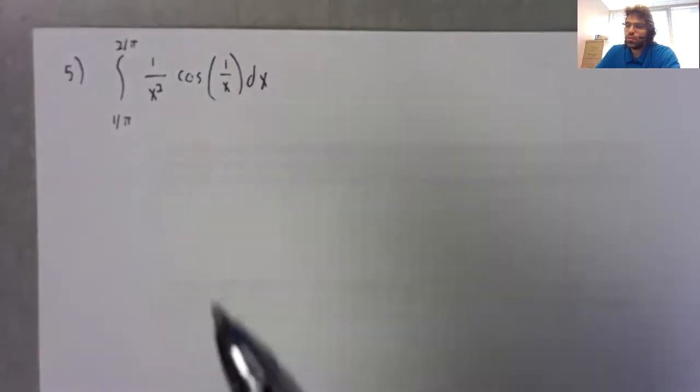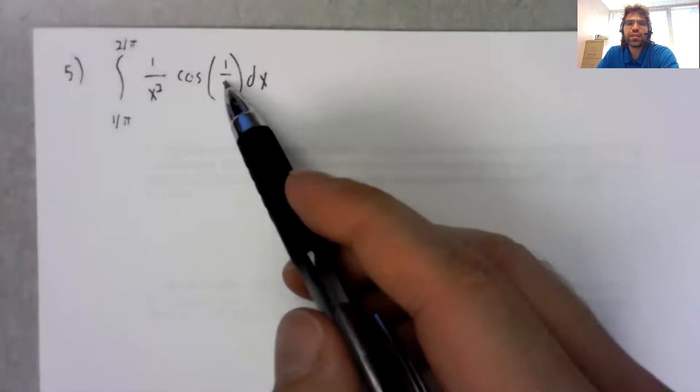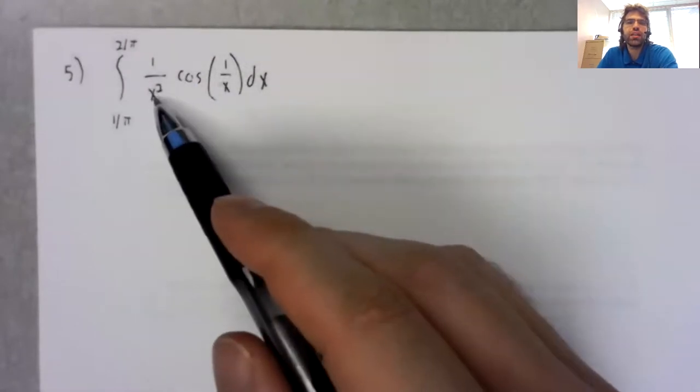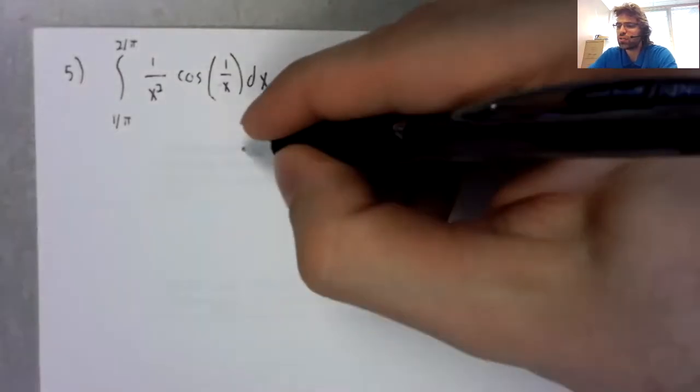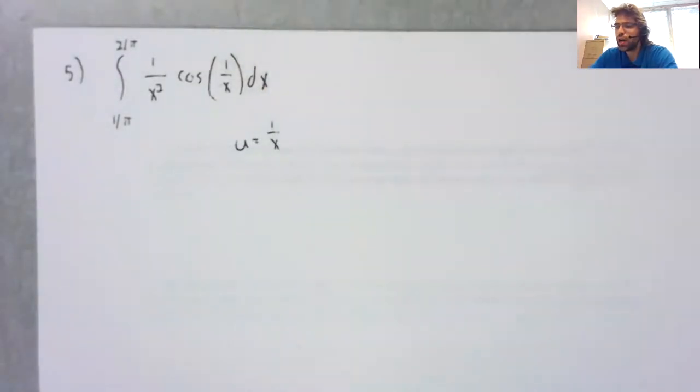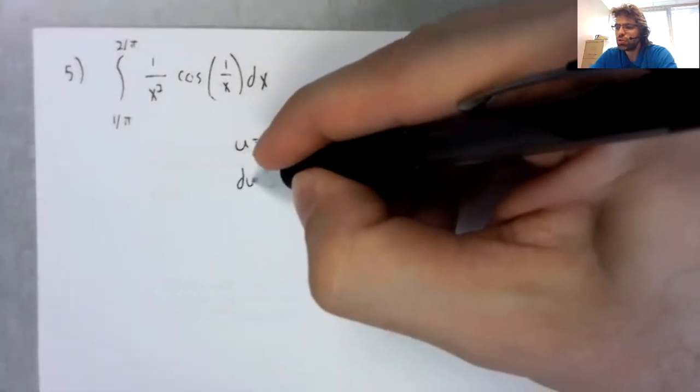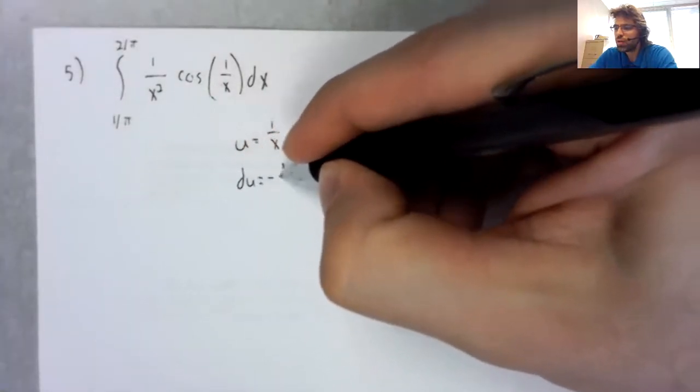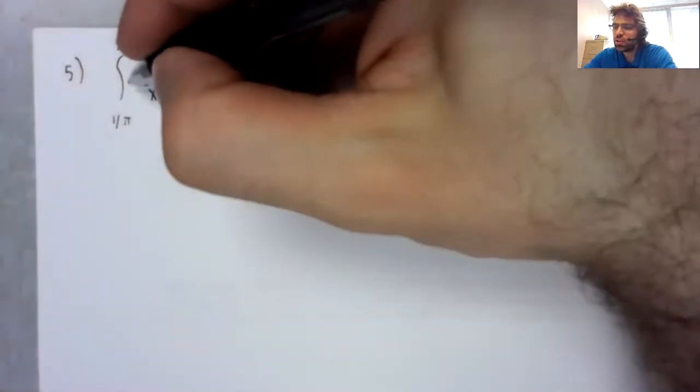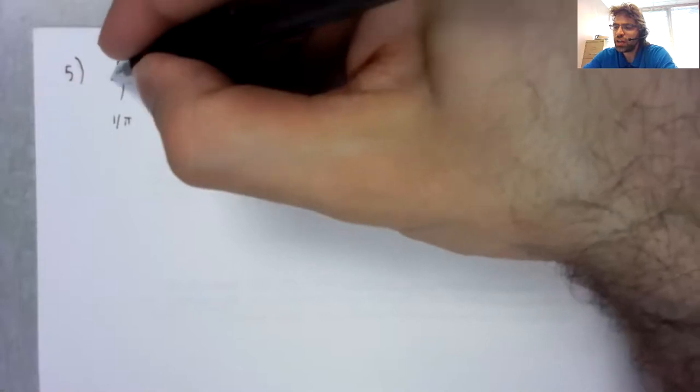So 1 over x has as its derivative negative 1 over x squared. So this is crying out for u-substitution. We don't have a negative sign,